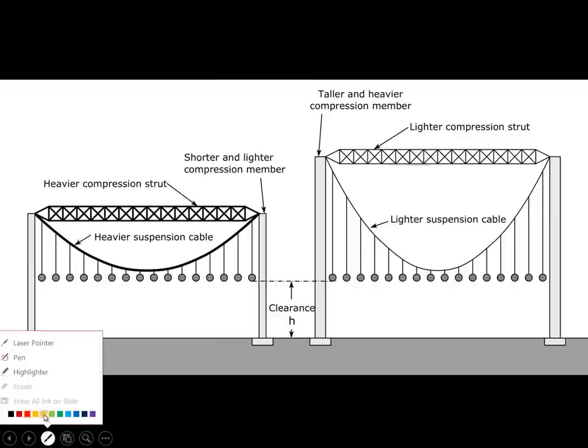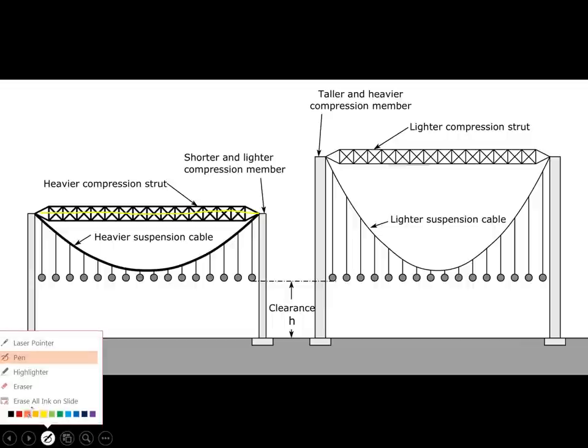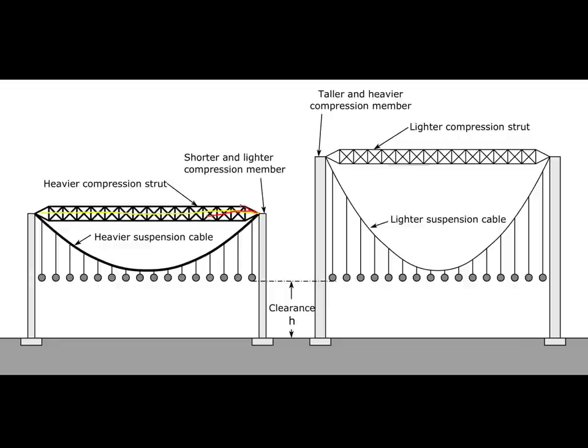So we're going to show that strut. This is a compression strut in the form of a truss, which makes it less vulnerable to buckling and also gives it support under its own self-weight. And it basically is creating a horizontal force here. It's pushing outward on the cable there and pushing outward on the cable here. The shallower the cable is, the more force it needs. And so we're showing this truss is pretty thick and massive in this case.